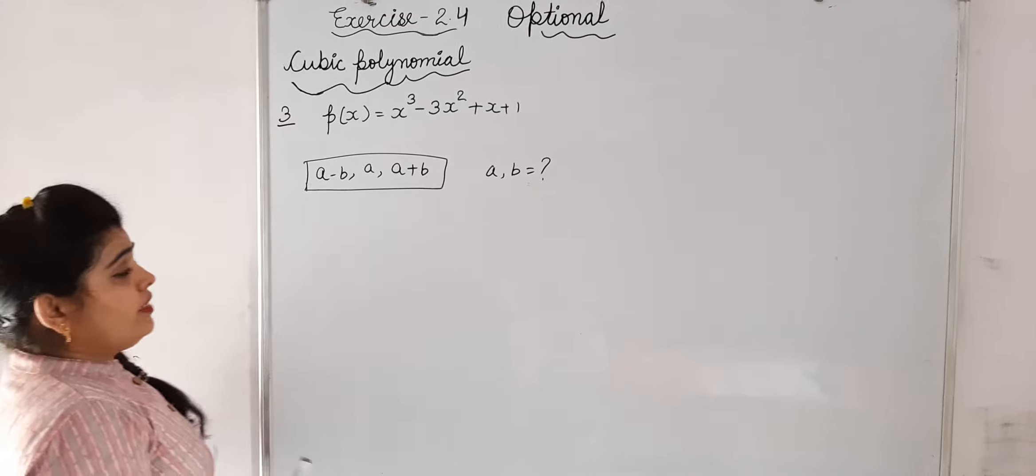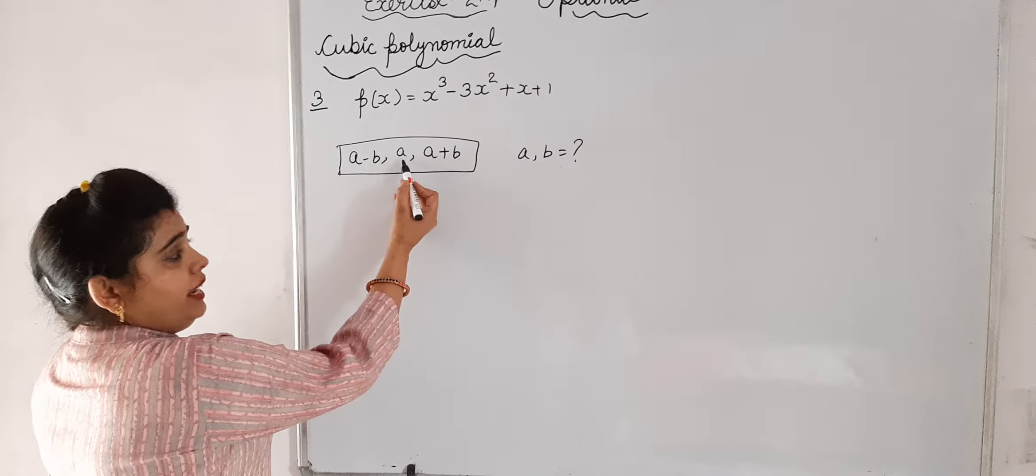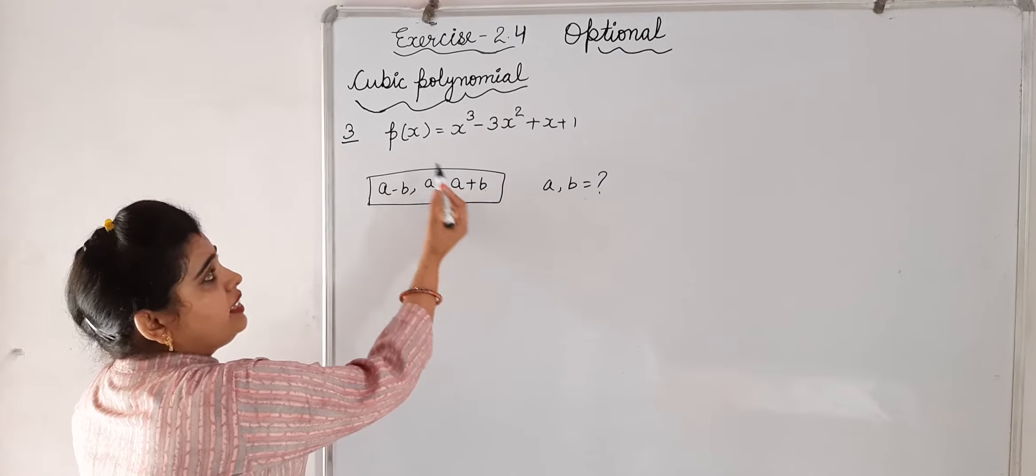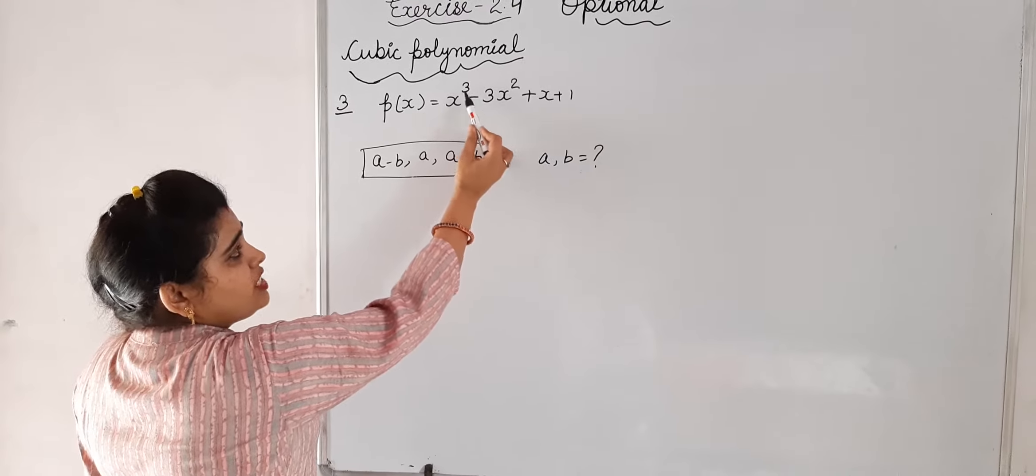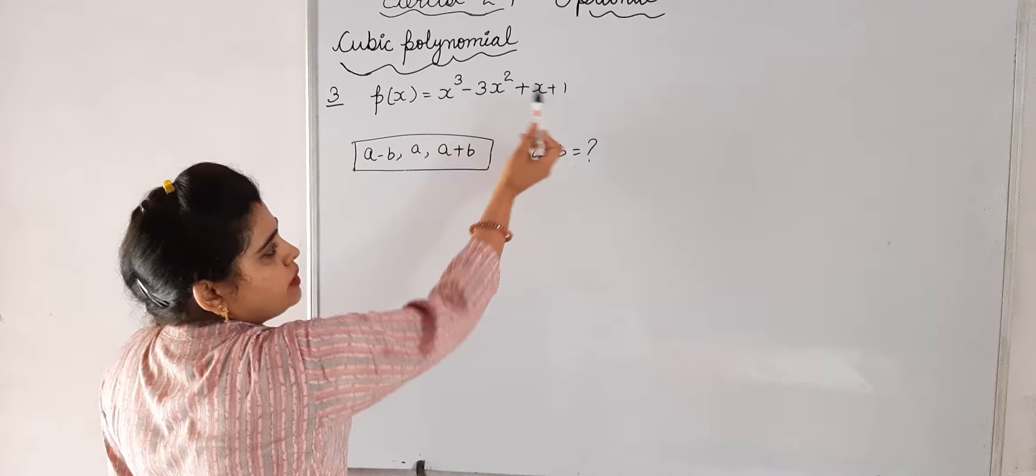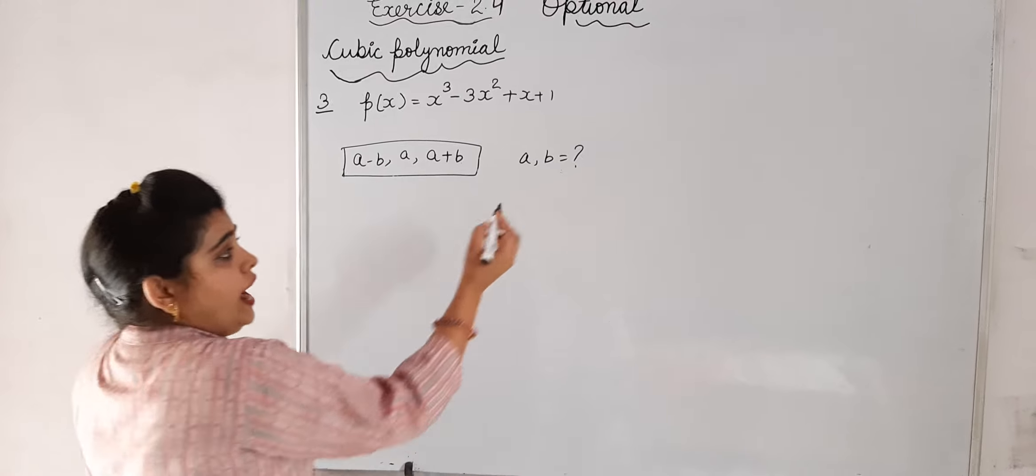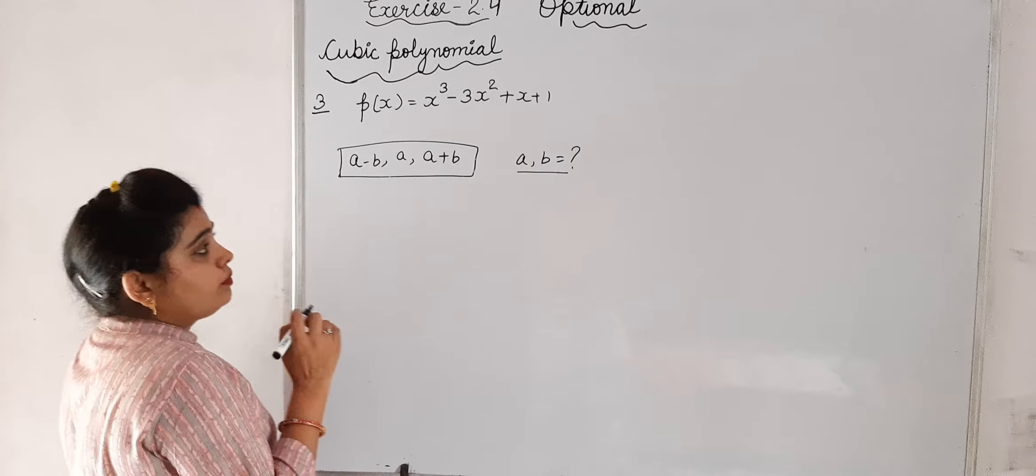In question number 3, it is given that a minus b, a, and a plus b are the zeros of the polynomial p(x) = x³ - 3x² + x + 1, and we have to find the values of a and b. For this,